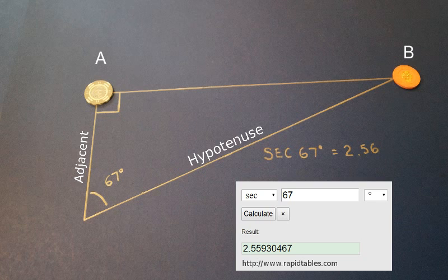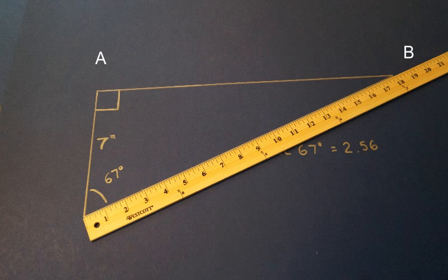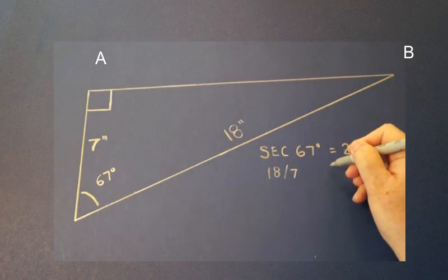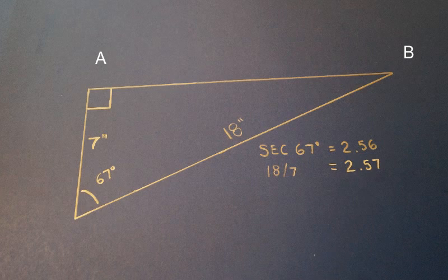And since we can measure the distances here we can verify that the right triangle method is valid by seeing if we get the same result by measuring. We see that the distance to A is 7 inches and the distance to B is 18 inches. And so when we divide 18 by 7 we get almost exactly the same ratio, 2.57. So now we know the method works. Try it yourself with any distances.